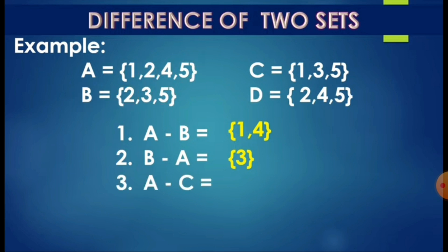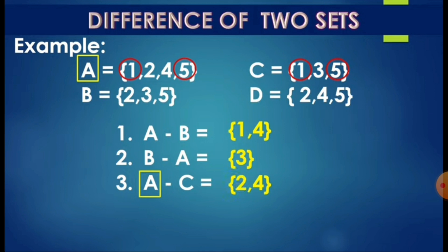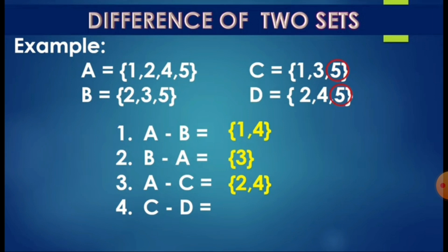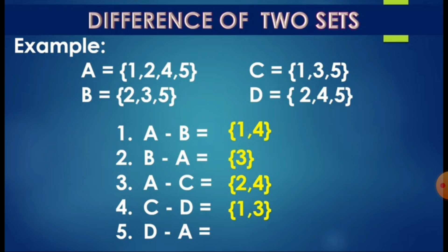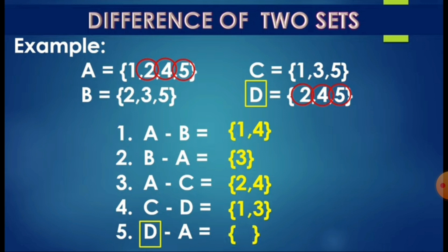More examples: A minus C — common elements of A and C are 1 and 5, so what remains in A is 2 and 4. C minus D — their common element is 5, so what remains in C is 1 and 3. D minus A — common elements of A and D are 2, 4, and 5, so nothing remains in D — the result is a null set.